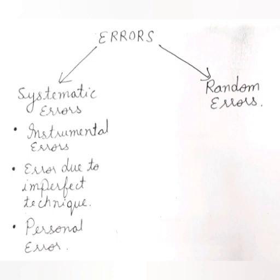Next is personal error. As the name suggests, it is due to the mistake of an experimenter or personal peculiarities. Personal errors are those that arise due to an individual's mistake, lack of proper setting of apparatus, carelessness, or mistakes in taking observations. For example, if you have a habit of always holding your head a bit too far to the right while reading a needle on a scale, this introduces an error due to parallax.